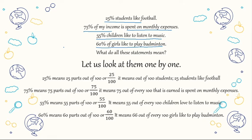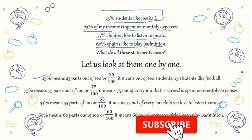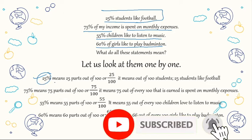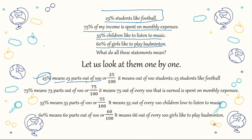Let's see one by one. '25% of students like football' — what does 25% mean? It means 25 parts out of 100. In other words, out of every 100 students, 25 students like football.